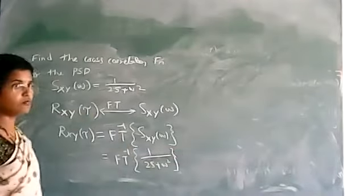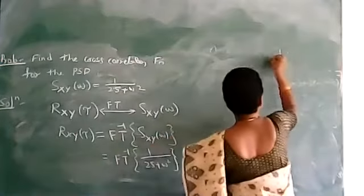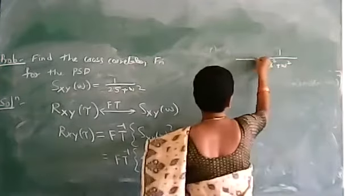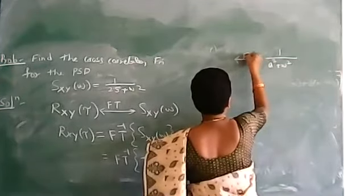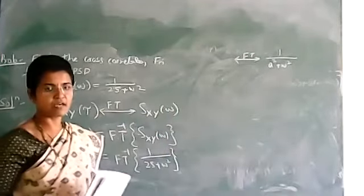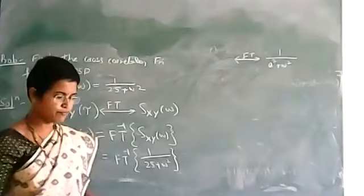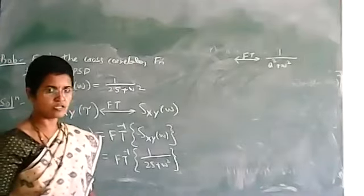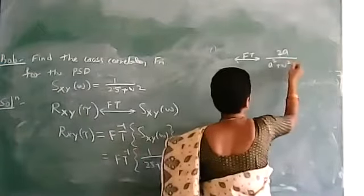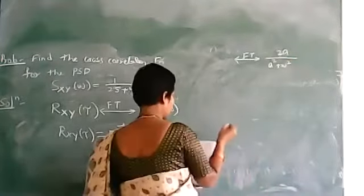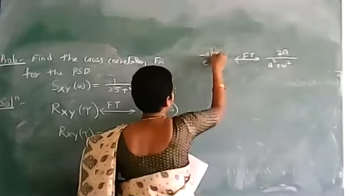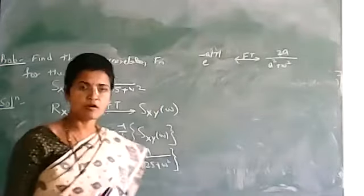We have the relation: 1 by a squared plus omega squared. What is its inverse Fourier transform? We know that 2a by a squared plus omega squared corresponds to e to the power of minus a times mod tau.